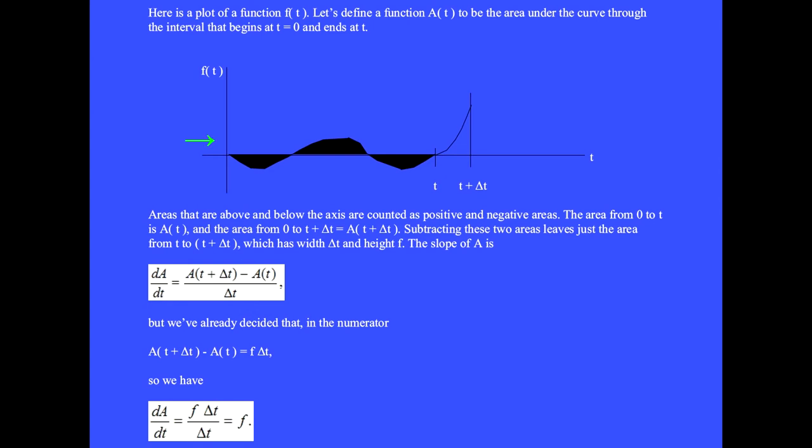Areas that are above and below the axis are counted as positive and negative areas. The area from 0 to t is A(t), and the area from 0 to t + Δt is A(t + Δt).